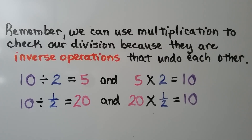Remember, we can use multiplication to check our division because they're inverse operations that undo each other. Ten divided by two is equal to five, and five times two is equal to ten. Ten divided by one-half is equal to twenty, and twenty times one-half is equal to ten.